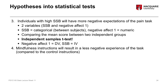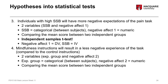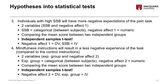Hypothesis four is that mindfulness instructions will result in less negative experience of the task compared to individuals who received control instructions. We've got two variables: our experimental group variable (a between-subjects categorical variable) and negative affect two (a numeric variable). Similar to hypothesis three, we want to compare the mean score of negative affect two between two independent groups, so we'll again use an independent samples t-test, with negative affect two as the dependent variable and experimental group as the independent variable.